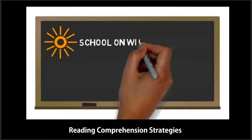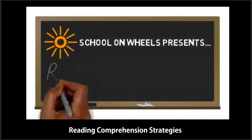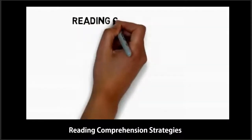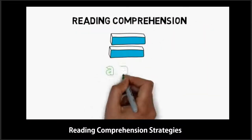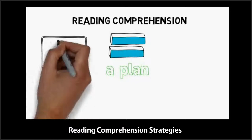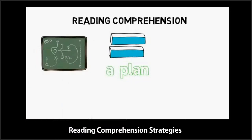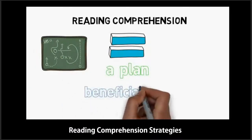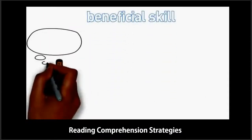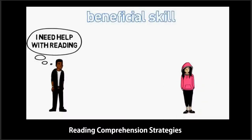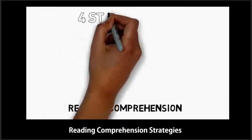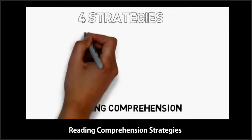School on Wheels presents Reading Comprehension Strategies. Reading comprehension strategies are plans or steps that good readers use to understand what they are reading. These strategies come more naturally for some readers than others, but every student can benefit from consciously practicing these strategies when reading during tutoring. In this video, we will cover four important ones: making connections, retelling, asking questions, and making predictions.